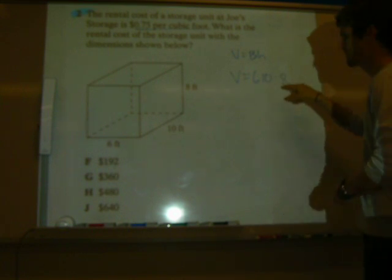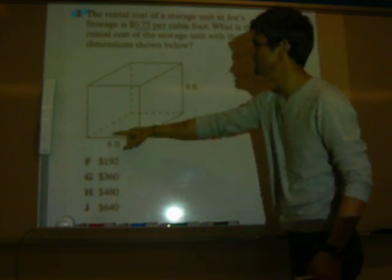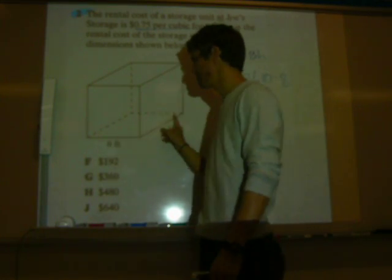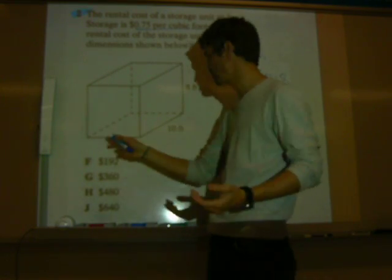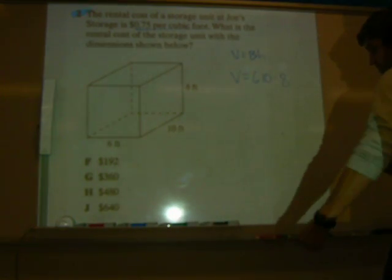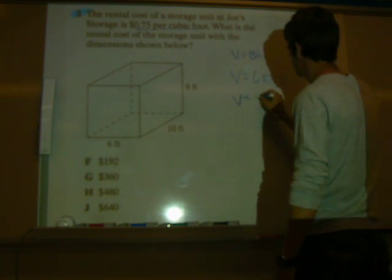So, what is B? The area of the base. So, the volume equals the area of the base, which is 6 times 10, right? Times the height, which is 8. Notice also, when you have a rectangular prism, you can always just do length times width times height. 6 times 10 times 8.